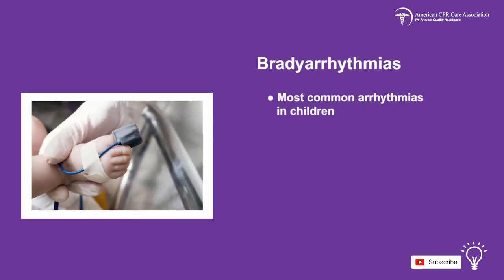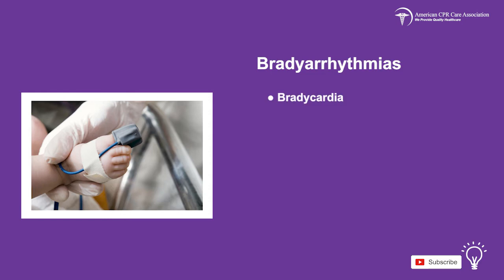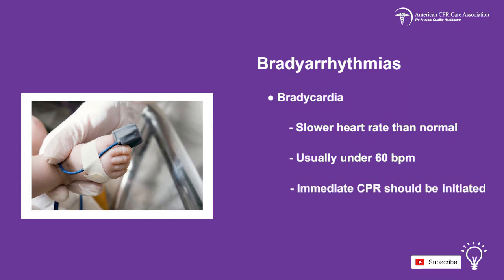Bradyarrhythmias are the most common arrhythmias in children, and they usually present with low blood oxygen or hypoxemia, low blood pressure or hypotension, and a buildup of acid in the bloodstream or acidosis. Bradycardia is a heart rate that is slower than normal for the age of the child. Anything under 60 beats per minute is indicative of bradycardia and immediate CPR should be initiated.